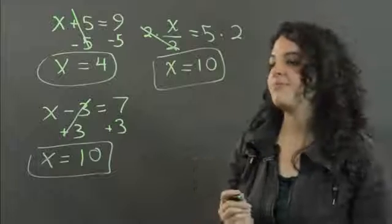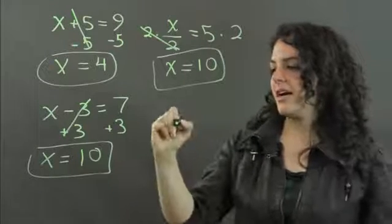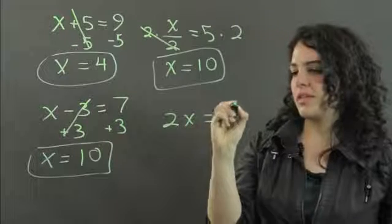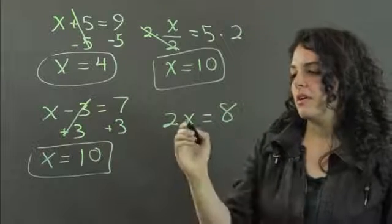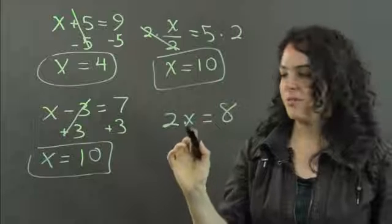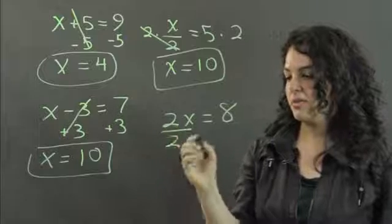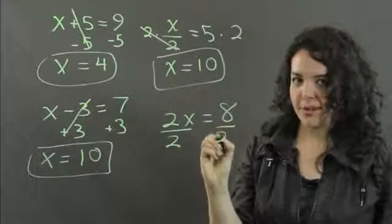And then the last one, if I have 2 times x equals 8. The inverse operation of multiplication is division. So I'm going to divide by 2 from both sides.